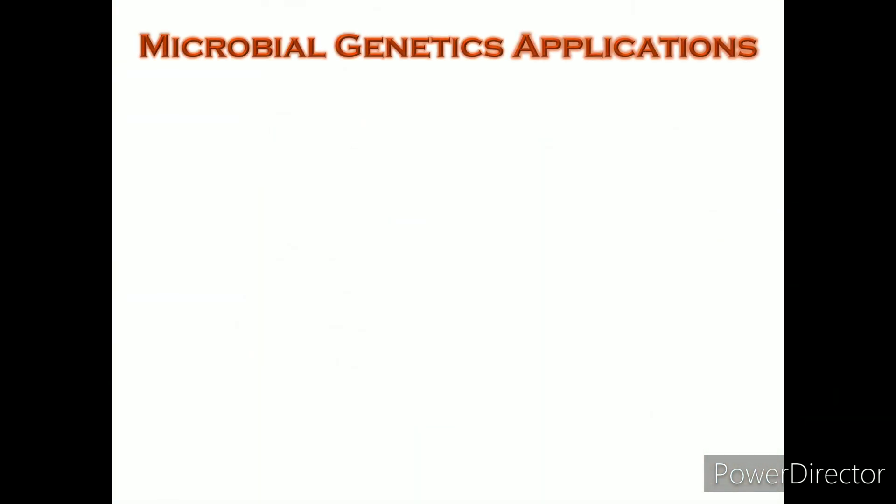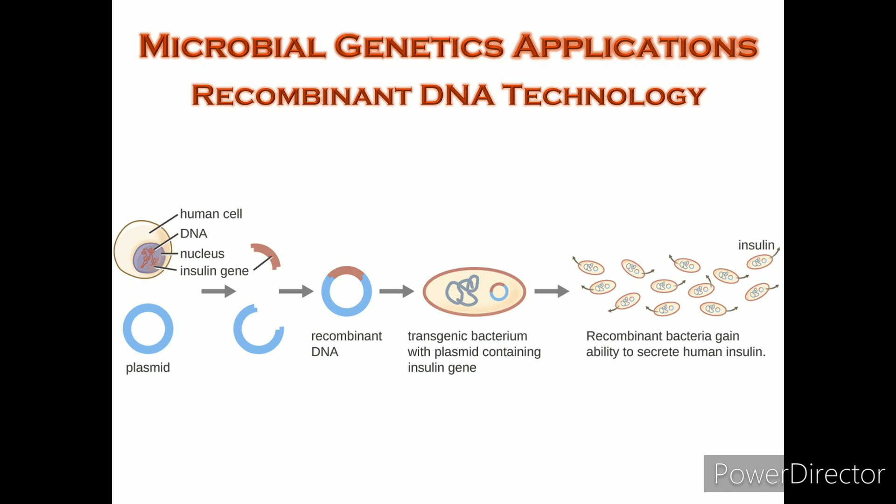Application of microbial genetics: Recombinant DNA technology. It is the artificial recombination of DNA inserted from two organisms. In this example, the human insulin gene is inserted into a bacterial plasmid. This recombinant plasmid can then be used to transform bacteria, which gains the ability to produce the insulin protein.